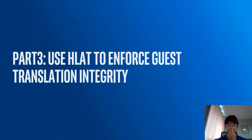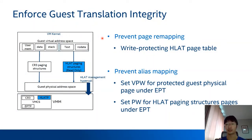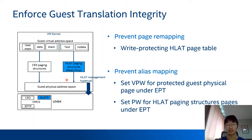Part three: an example of using HLite to enforce guest translation integrity. Here is the high-level architecture. We have the VMM and a virtual machine. In the virtual machine, the guest kernel maintains two page tables: the CR3 page table and the HLite page table. The guest kernel identifies guest pages whose translations need to be protected — here we use kernel text and rodata as an example. The guest kernel sets up protected translations in HLite, and the VMM protects the HLite page table under EPT, so protected translations can't be redirected. These translations map to some guest physical pages. For these guest physical pages, the VMM sets the VPW flag for the entries under EPT and sets the PW flag for HLite paging structures.